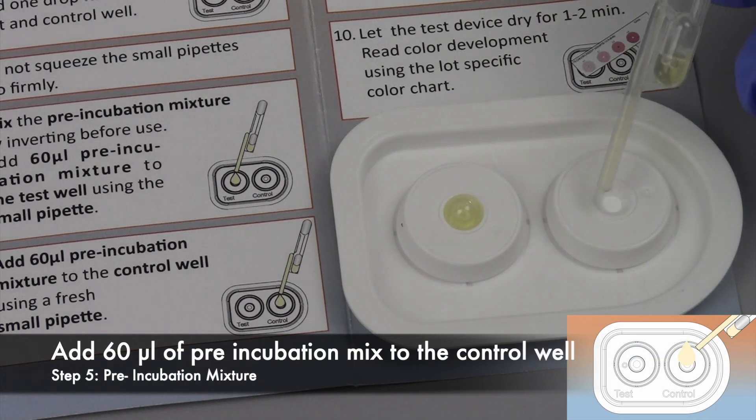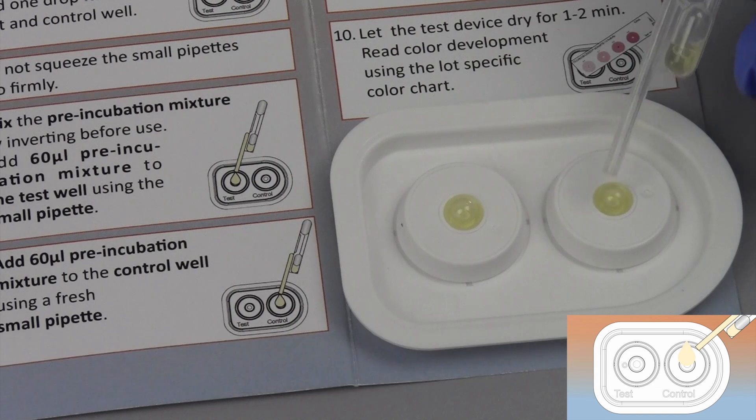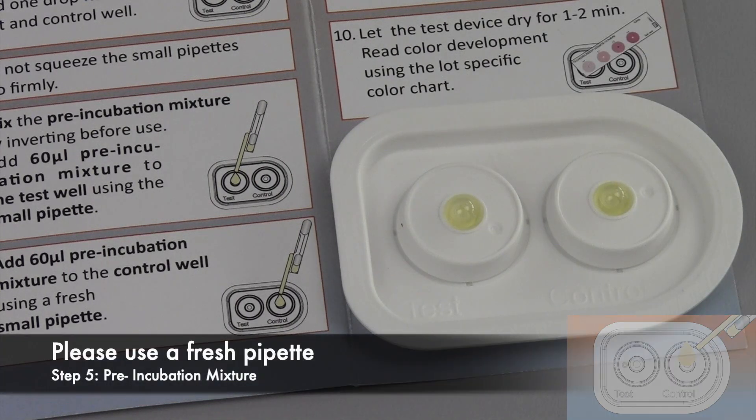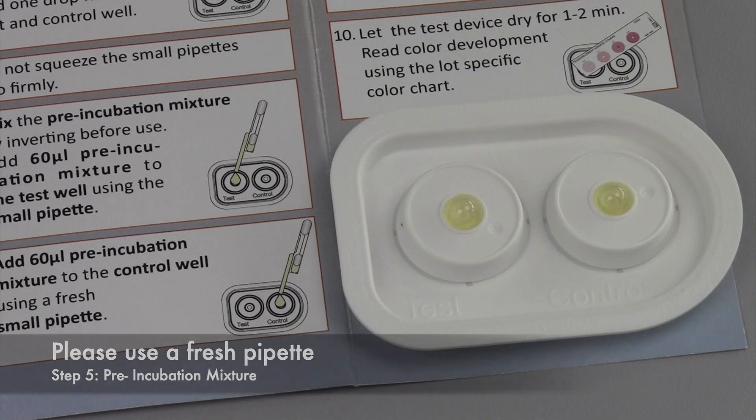Thereafter, add 60 microliters of the pre-incubation mixture to the control well. Please use a fresh pipette.